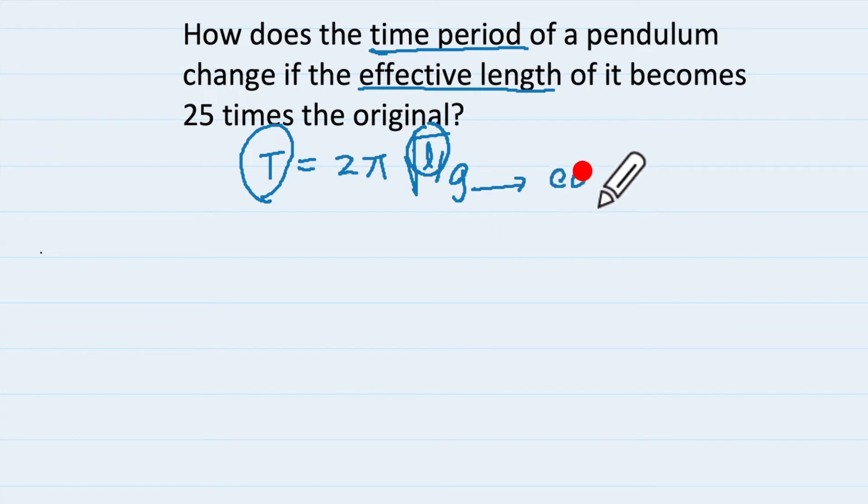What is this g? g is constant, it is not going to change. So we are going to say time period and length. How are they changing? Of course 2 pi is constant. So time is directly proportional to under root of the effective length.